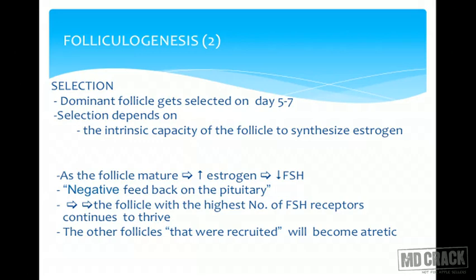The dominant follicle is selected on day five to seven. Selection depends on the intrinsic capacity of the follicle to synthesize estrogen. As the follicle matures, there is increased estrogen and decreased FSH — negative feedback on the pituitary. The follicle with the highest number of FSH receptors continues to thrive, and the other recruited follicles become atretic.